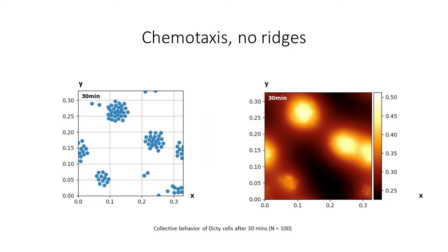So this is a simulation of DICT cells with just the chemical signaling gradient. As you can see on the right here, a lot of them have aggregated. This is just a simulation with the chemical signaling gradient.